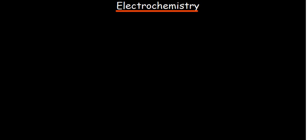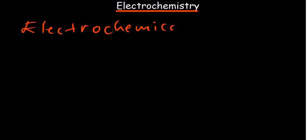In summary, electrochemistry studies the conversions of energy between electrical and chemical energy. We have what we call electrochemical reactions under electrochemistry. An electrochemical reaction can be defined as any reaction that involves the transfer of electrons from one reactant to the other.